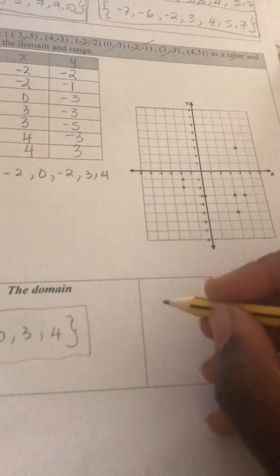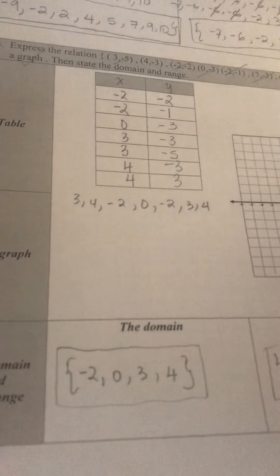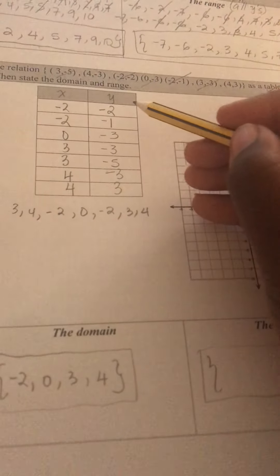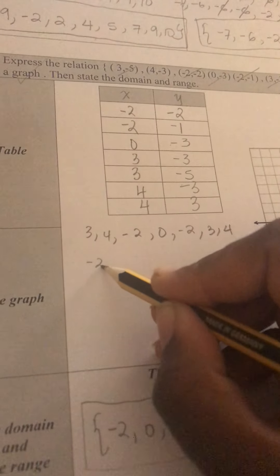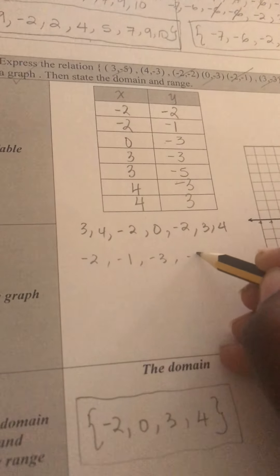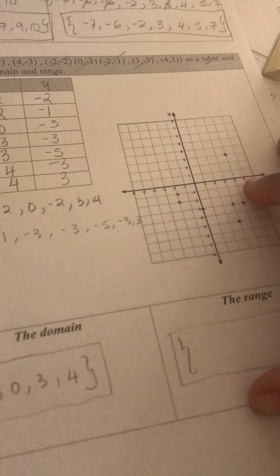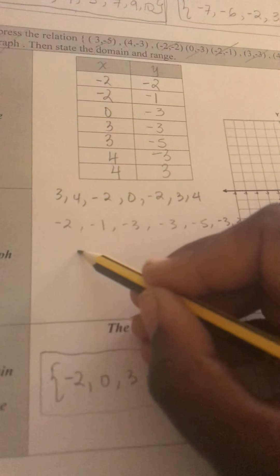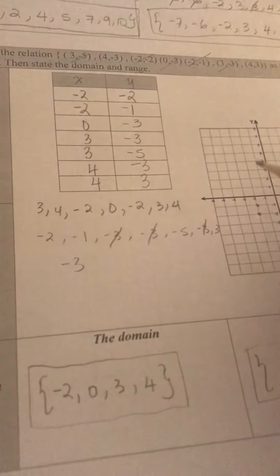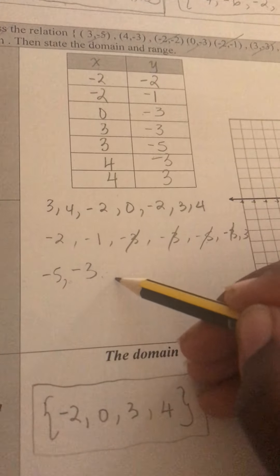Now I'm going to do the range. I need to write the numbers separated by commas, from least to greatest, without repeating. So the values are: negative 2, negative 1, negative 3, negative 3, negative 3, negative 5, negative 3, and 3. My smallest is negative 5 — not negative 3. Negative 5 is smaller than negative 3. Then after negative 5 is negative 3, after negative 3 is negative 2.